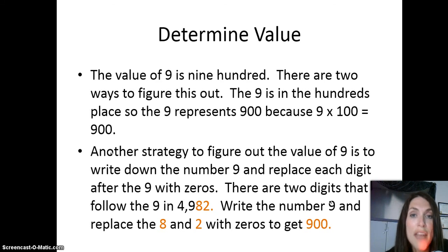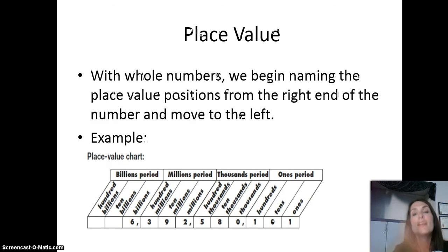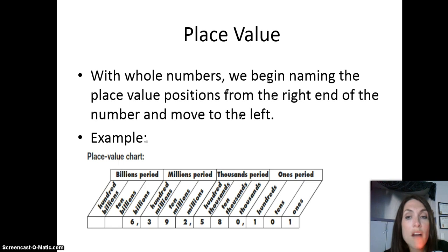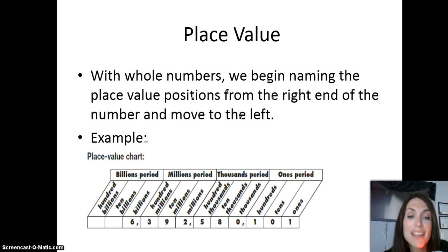Those are two strategies to determine the value of a digit in a number. When working with whole numbers, we begin naming the place value positions from the right end of the number and move to the left. Here is our place value chart. I always start at the ones column, the right end of the number, and move left: ones, tens, hundreds, thousands, ten thousands, hundred thousands, millions, ten millions, hundred millions, and billions.